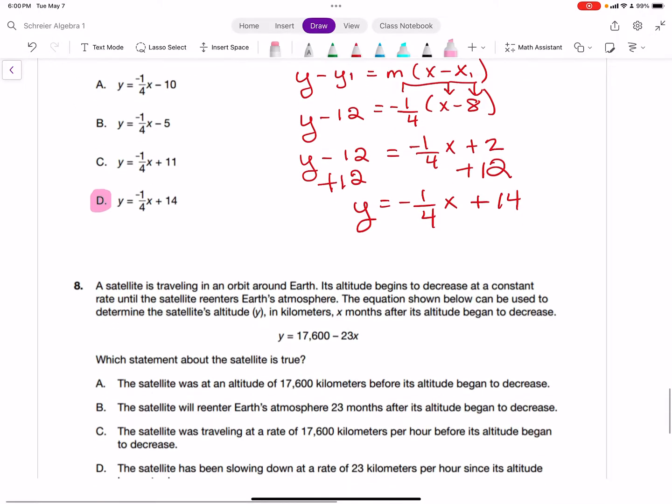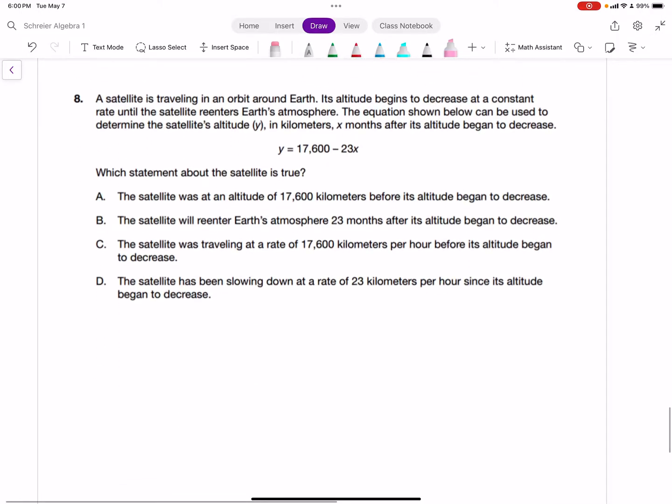Let's move on to our last question for our review today. It says, as a satellite is traveling in an orbit around Earth, its altitude begins to decrease at a constant rate until the satellite re-enters Earth's atmosphere. The equation shown below can be used to determine the satellite's altitude, or y. Y is the altitude, and that's in kilometers, and x is months after its altitude has began to decrease. And then we're given this equation: y is equal to 17,600 minus 23x. Which statement about the satellite is true?